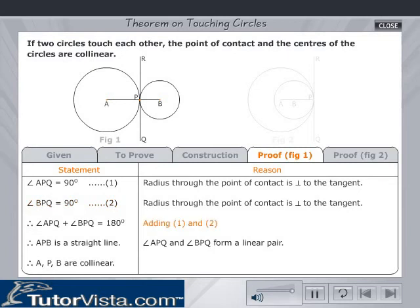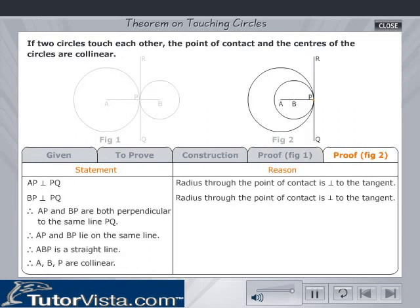Adding equations 1 and 2, we get angle APQ plus angle BPQ equals 180 degrees. Therefore, APB is a straight line, since angle APQ and angle BPQ form a linear pair. Hence, points A, P, B are collinear. In figure 2,